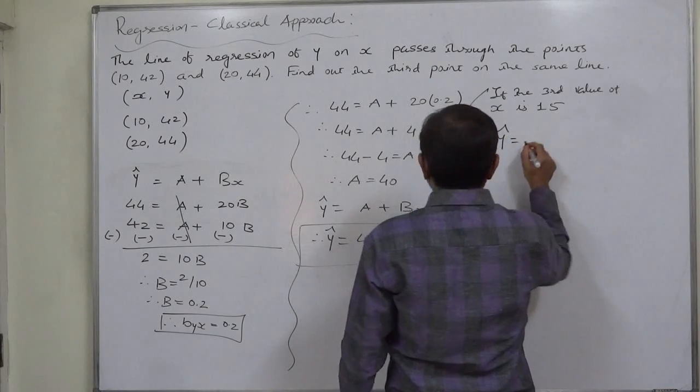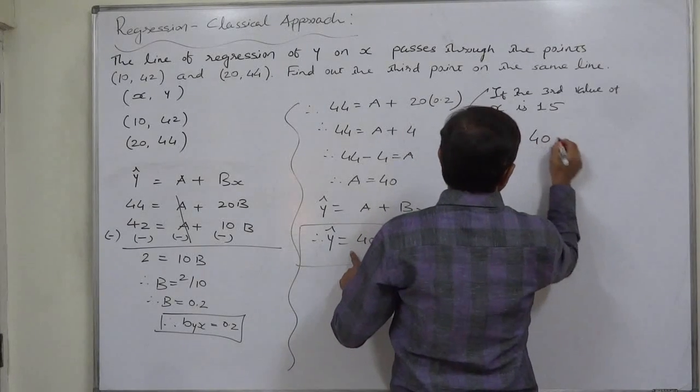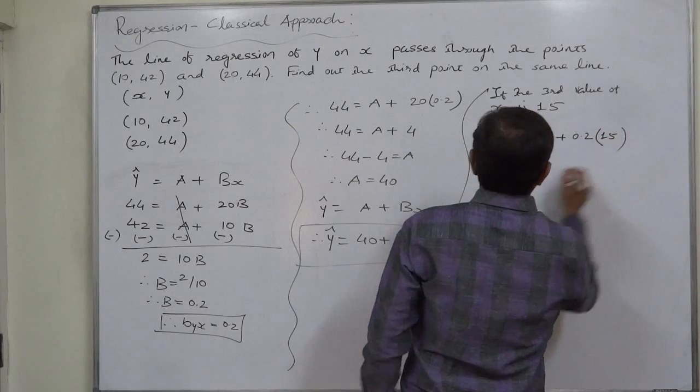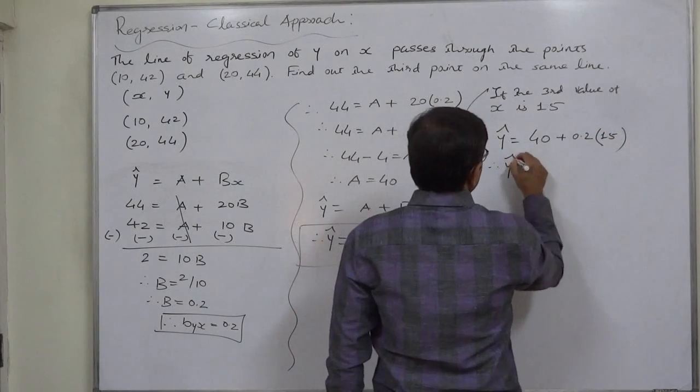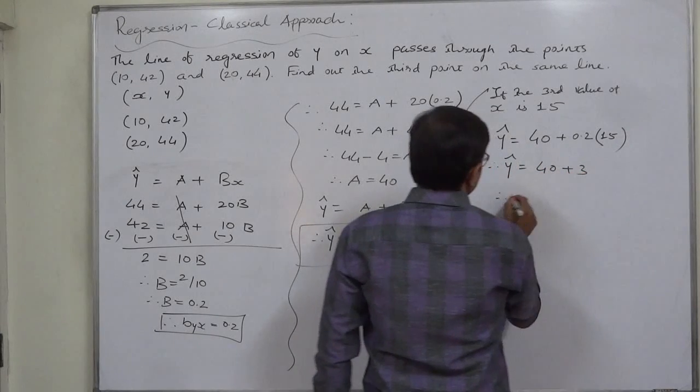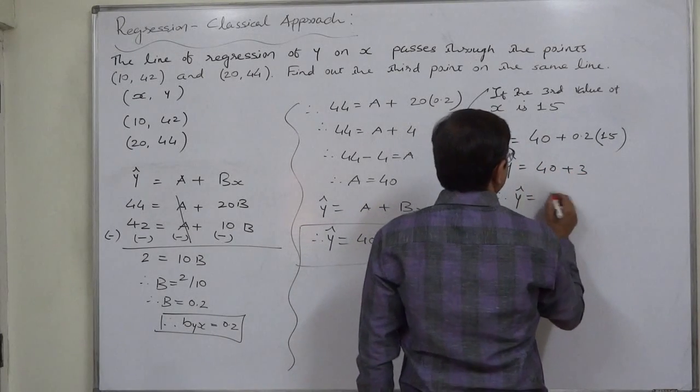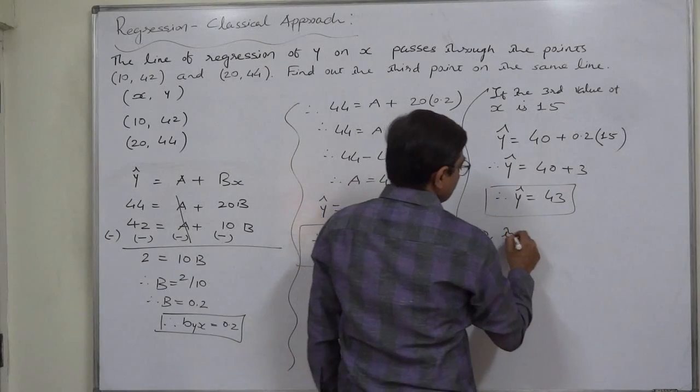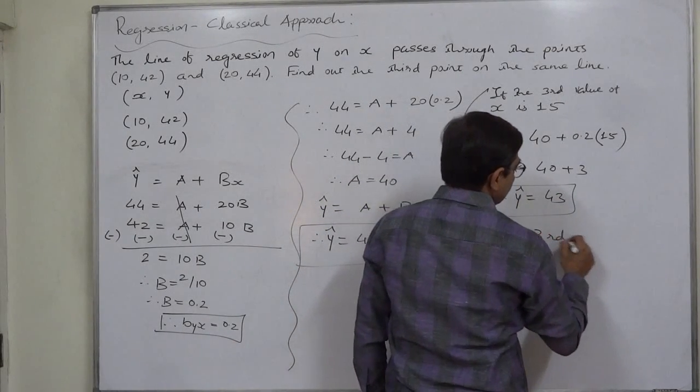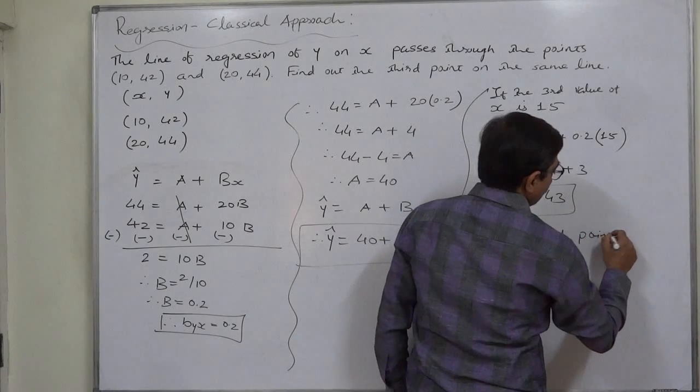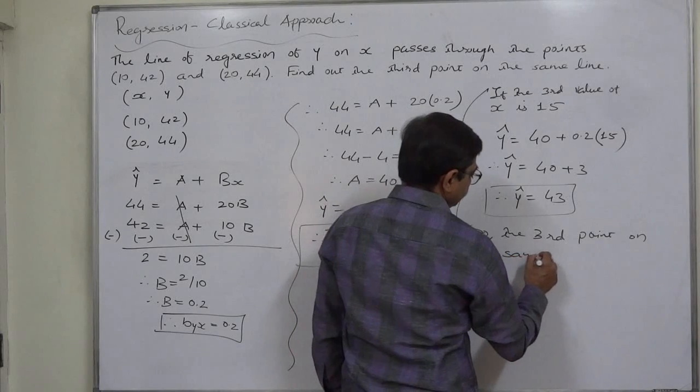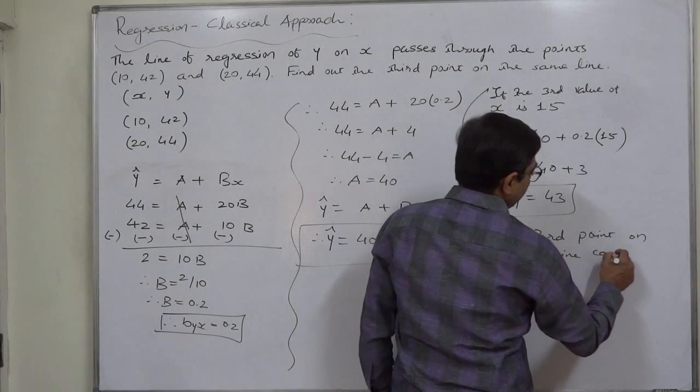If the third value of x is 15, then the third possible value of y will be 40 + 0.2 × 15, so it will be 40 + 3, and it will be 43. So the third point on the same line can be (15, 43).